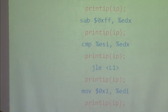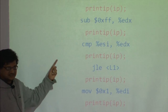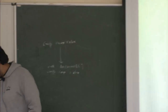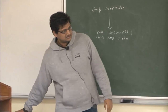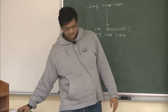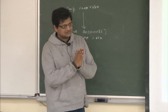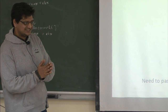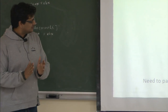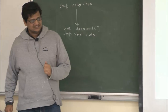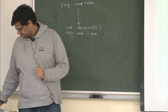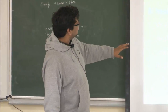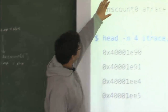Here we need to pass an input argument to the analysis function — in the previous example we were not passing any. In the Intel world, IP refers to the instruction pointer, same as the program counter. The itrace tool works similarly and outputs to an itrace.out file.